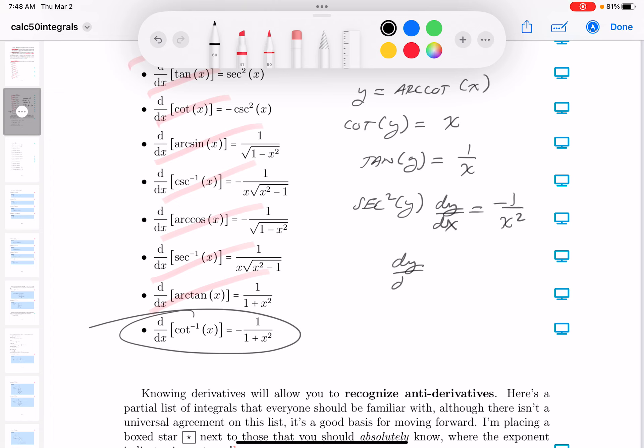dy dx is going to equal, let's see, I'm dividing both sides by the secant squared, so I'm going to get minus cosine squared of y over x squared. All right? So what are you going to do there? I've got to go back to my right triangles. So let's put it down. I'll put it over here.